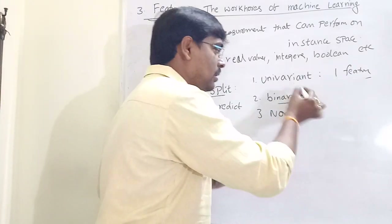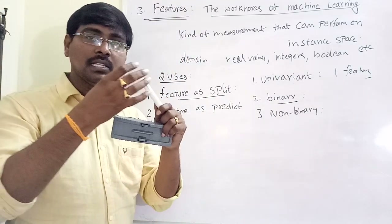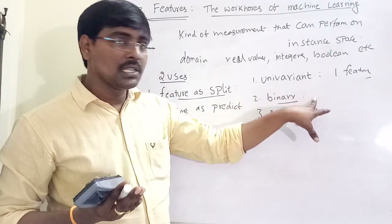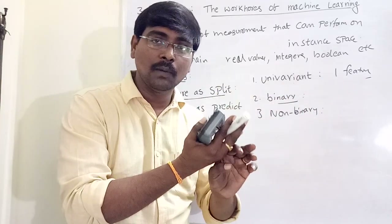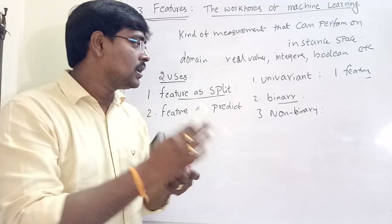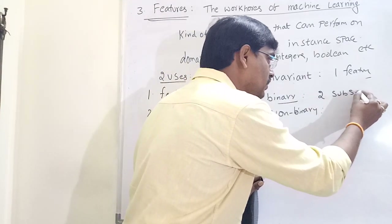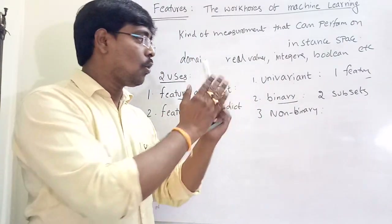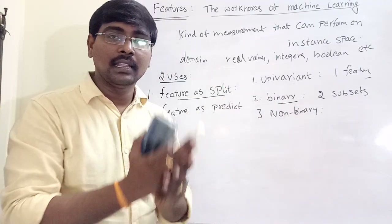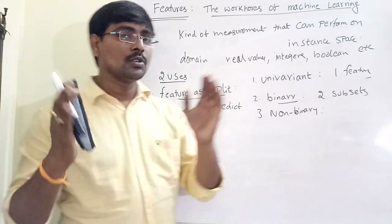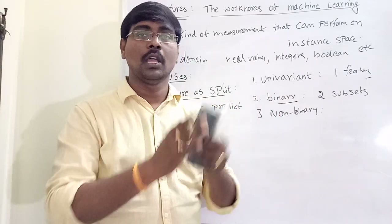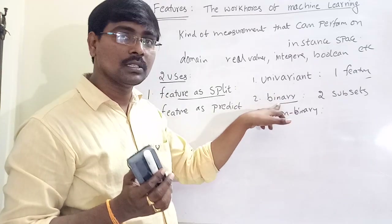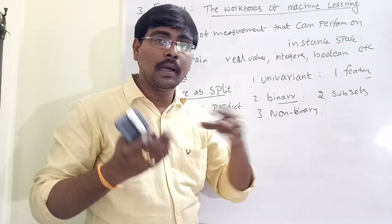For binary split, based on the values present in the feature we construct a model such that the instance space is divided into two subsets — one subset satisfies the condition of the feature, and another subset does not satisfy the condition. So the total instance space is divided into two parts.